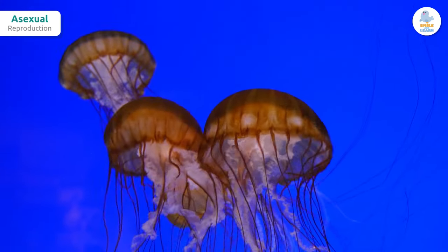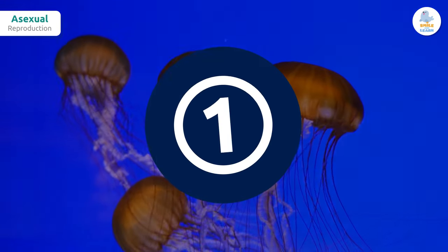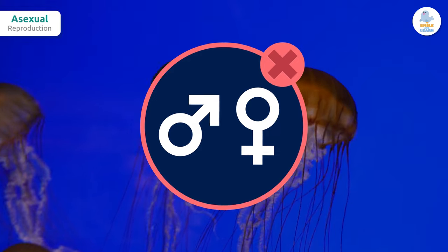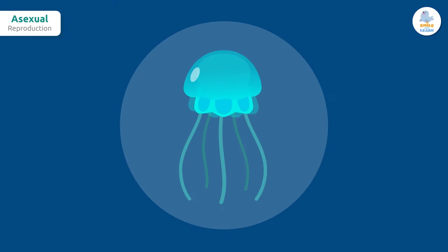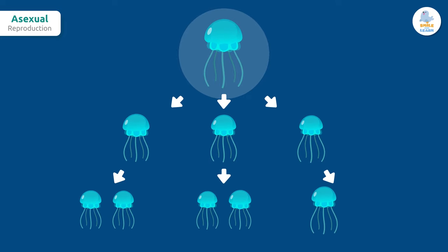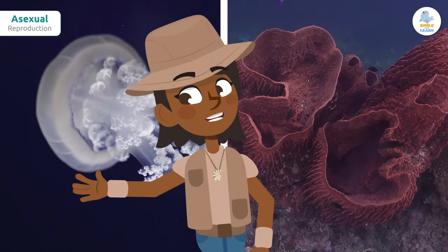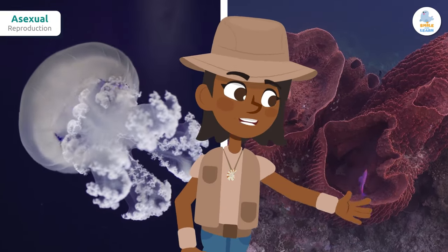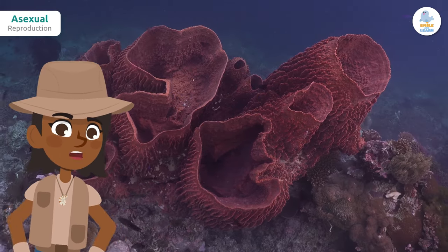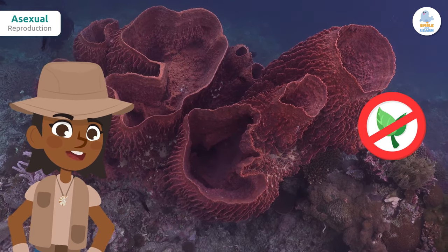Only a few animal species reproduce in this way. Asexual reproduction involves only one parent, and they do not have special reproductive organs. Asexual organisms can make identical copies of themselves when they become adults. An example is jellyfish or sea sponges. You heard that right — sea sponges are animals, although many years ago people thought they were plants.